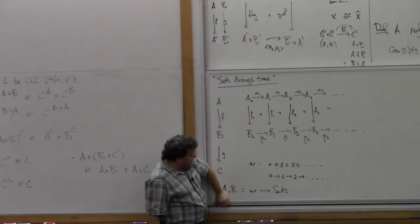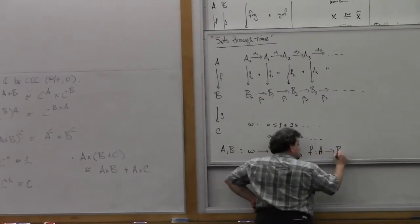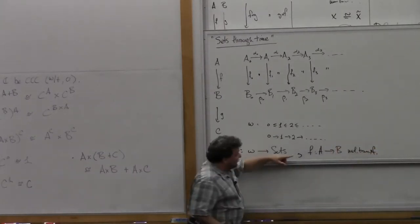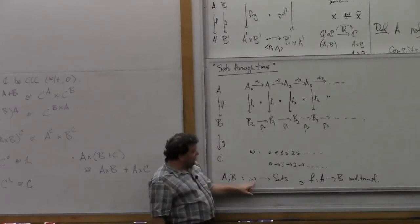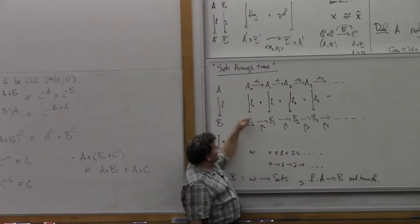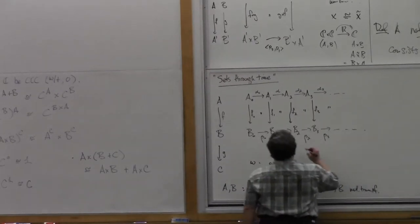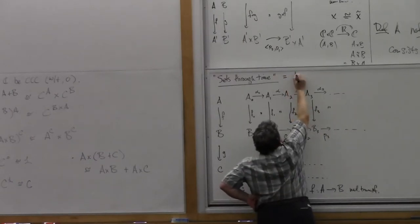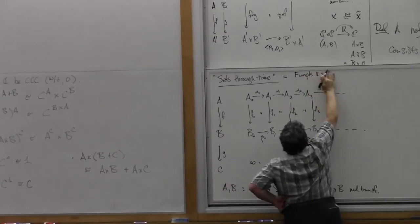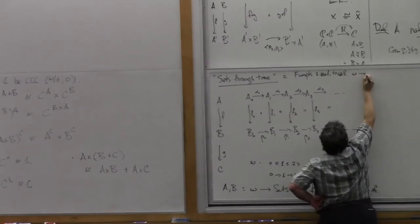So A and B are exactly functors, and then this F that I wrote down is exactly a natural transformation from this functor to that functor. A natural transformation in this case is an indexed family of maps — F0, F1, F2, and so on — such that for any maps in the index category, all the corresponding squares commute. So the category of sets through time is nothing but the category of functors and natural transformations of the form omega into Set.